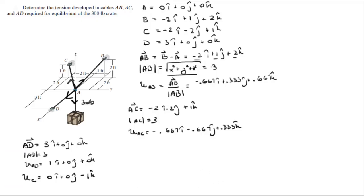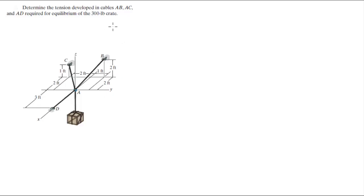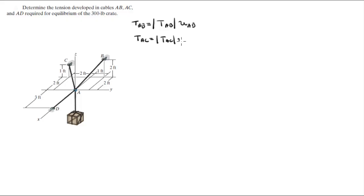Now that we have all the unit vectors, the tension of the cables in Cartesian vector form is given by multiplying the tension magnitude by the unit vector in their respective direction. So tension AB equals magnitude times unit vector AB; tension AC equals magnitude times unit vector AC; tension AD equals magnitude times unit vector AD; and the crate force equals 300 pounds times its unit vector.